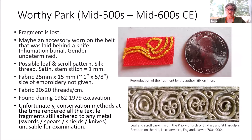The Worthy Park fragment is from Worthy Park and it's lost. It's from the mid-500s to mid-600s. It may have been an accessory worn on the belt, laid under a knife. It was found in an inhumation burial and the gender is unknown. It was a possible leaf and scroll pattern with silk thread done in satin and stem stitch, with a stitch length of about one millimeter.